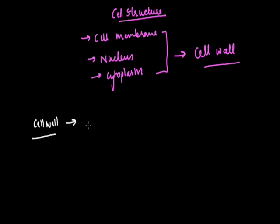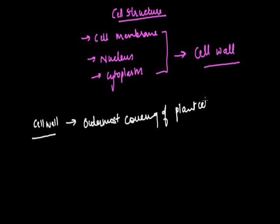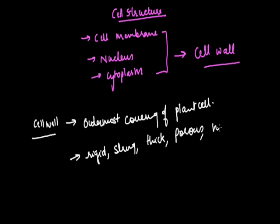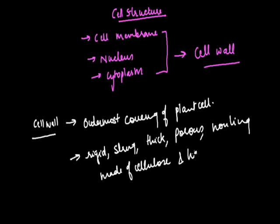The cell wall is the outermost covering of the plant cells and it is absent in animal cells. Regarding the texture of the cell wall, it is very much rigid, strong, thick, porous, and a non-living structure. It is made of cellulose, that is carbohydrate, and hemicellulose.